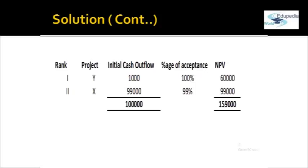So in Y we invest Rs. 1,000, and balance Rs. 99,000 is left, so we can accept 99% of project X. In Y, the NPV is Rs. 60,000. In project X, we multiply the NPV by 99% to get the proportionate acceptance NPV. The total NPV for accepting project Y fully and 99% of project X is Rs. 1,59,000. This is the highest NPV achievable; any other project mix would give less. This is how capital rationing is done.